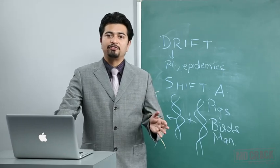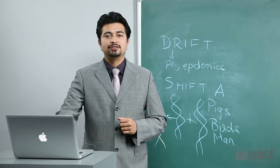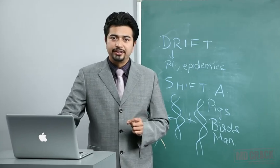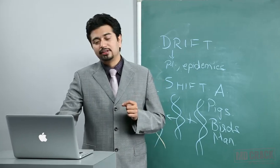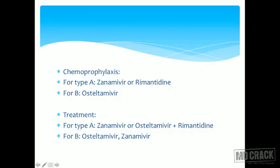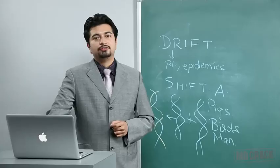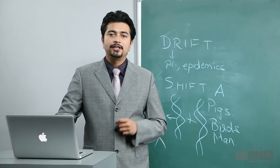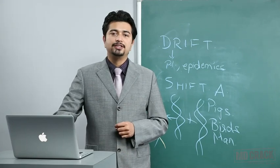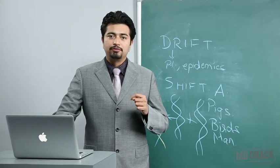The drugs are somewhat tricky since we are used to rimantadine and amantadine at 100 mg. These newer drugs — zanamivir and oseltamivir — have now come into play and should also be known. With that, we finish influenza and move on to leprosy, which is a disease of great public health importance.